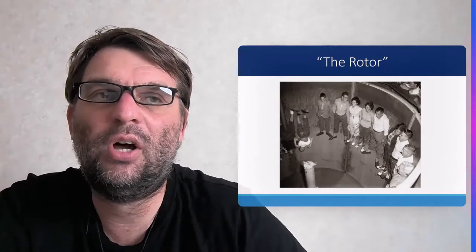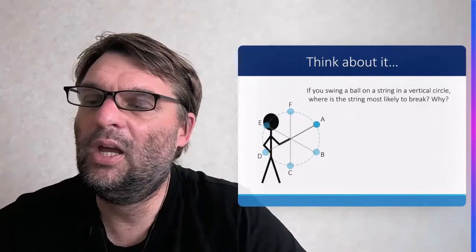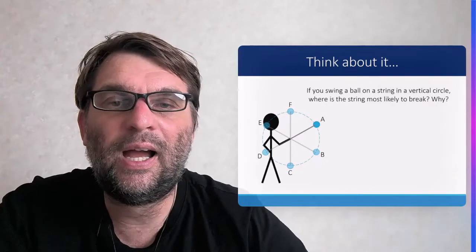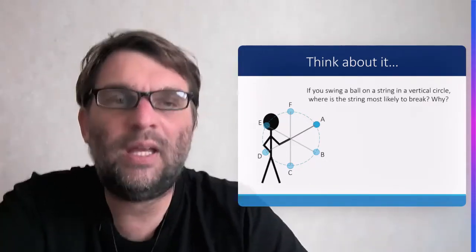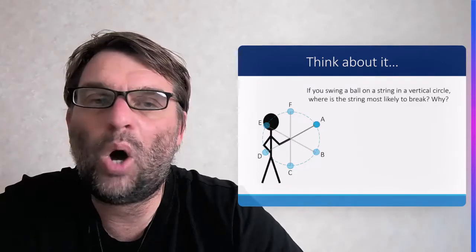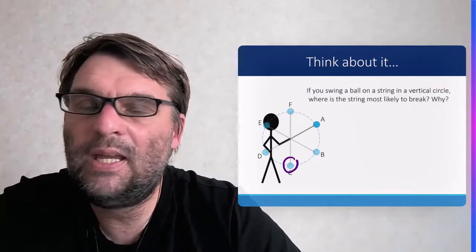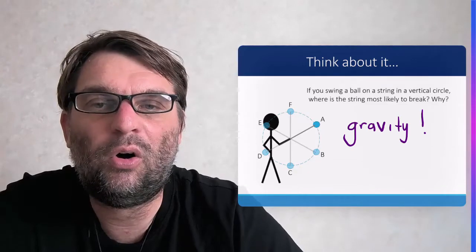Think about swinging a ball on a string in a vertical circle coming towards you. Where is the string most likely to break and why? It's most likely to break at point C, due to the effect of the force of gravity.